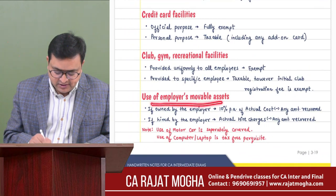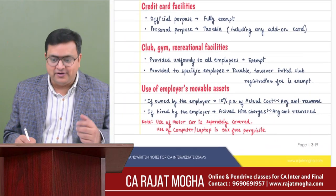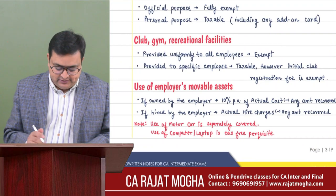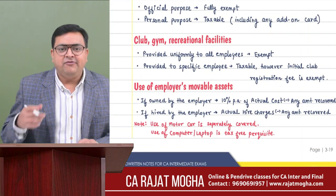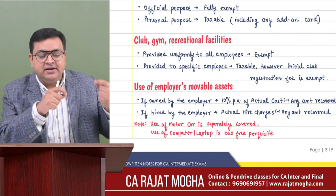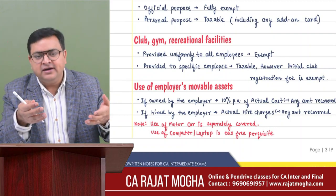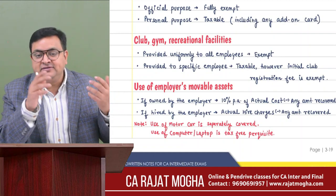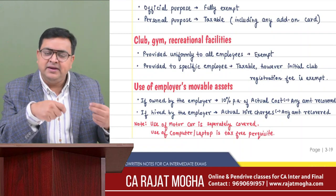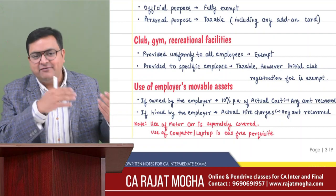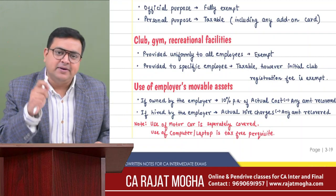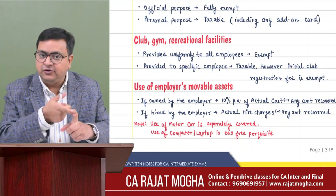Now it's the turn for use of assets — use of employer's asset. This is page number 3.19. So if the employee is using any of the employer's asset, and the employer has given it for use — this is not a permanent transfer, it is temporary. The employee can use it till they are working with the company. If they resign, they have to give it back. So if you use any asset of your employer, it becomes a perquisite.